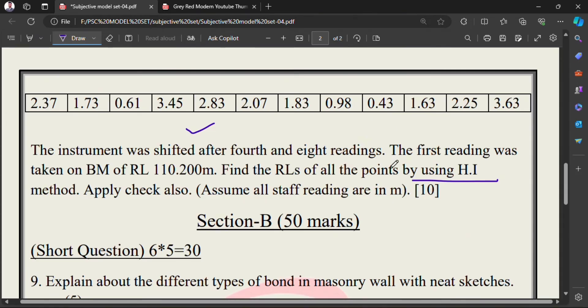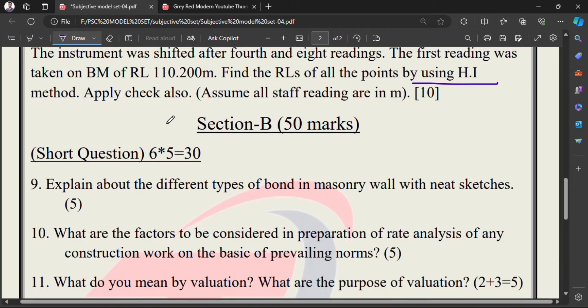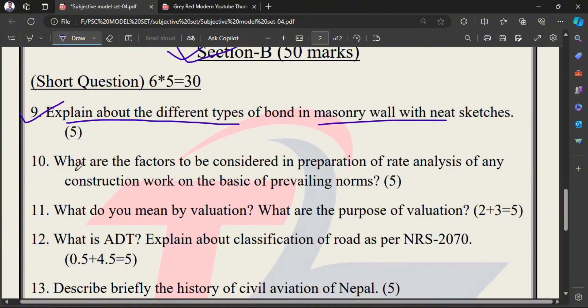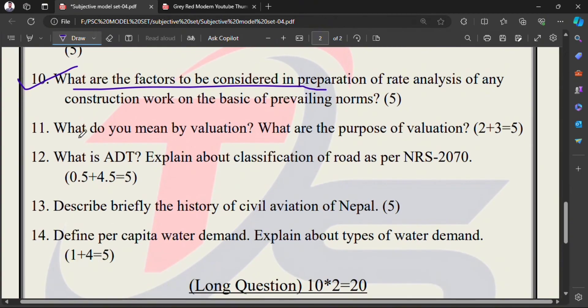Now Section B. Section B has short questions - you can explain about the different types of bond in masonry wall with neat sketch. Some can make it long question, some can make it short question. What are the factors to be considered in preparation of rate analysis? This is a popular question. What do you mean by valuation? What are the purpose of valuation? This is an estimate question.